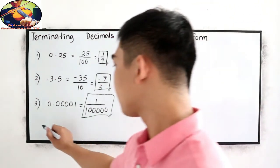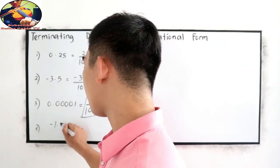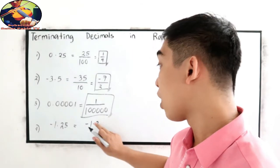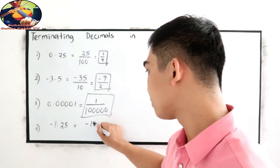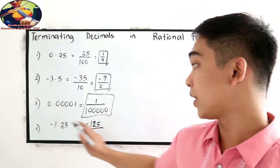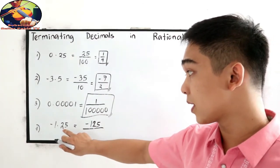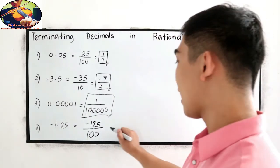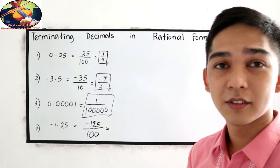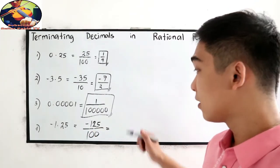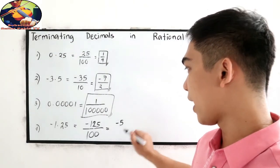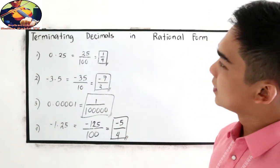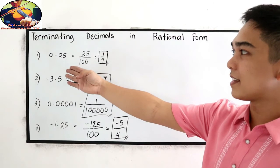Number 4: negative 1.25. Copy negative 125 over — we have 2 decimal places, so 2 zeros in our denominator, giving us negative 125 over 100. This is divisible by 25: 125 divided by 25 is 5, and 100 divided by 25 is 4, giving us negative 5 over 4. That is how to write terminating decimals to rational form.